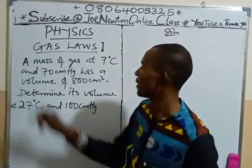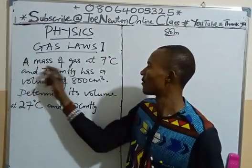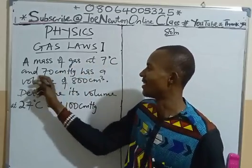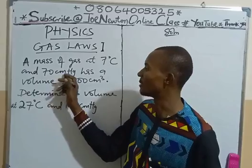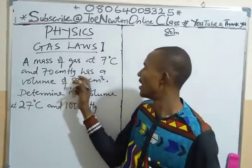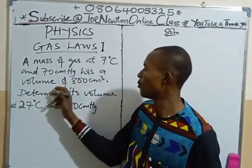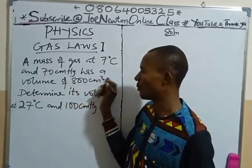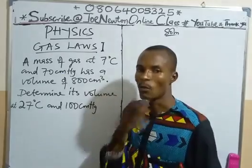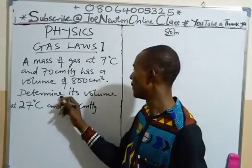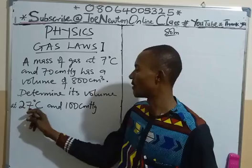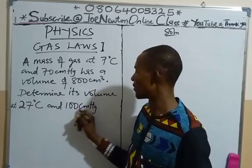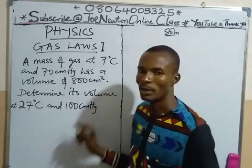The question says that a mass of gas at 7 degrees Celsius and 70 centimeters of mercury has a volume of 800 centimeter cube. We are expected to determine its volume at 27 degrees Celsius and 100 centimeters of mercury.